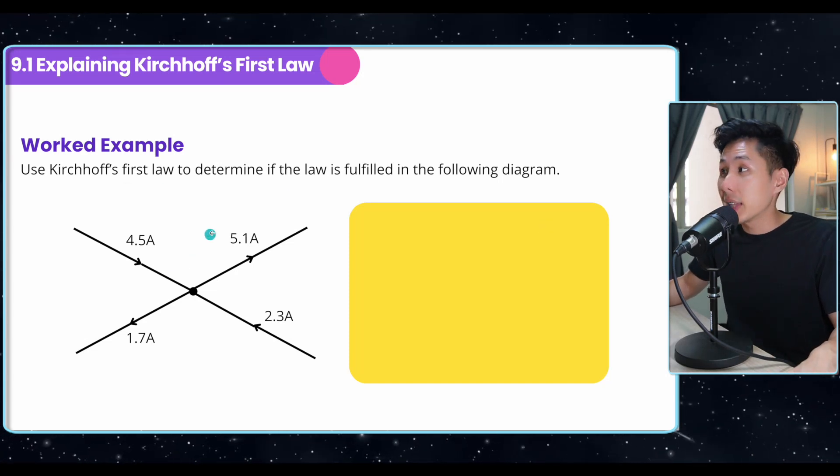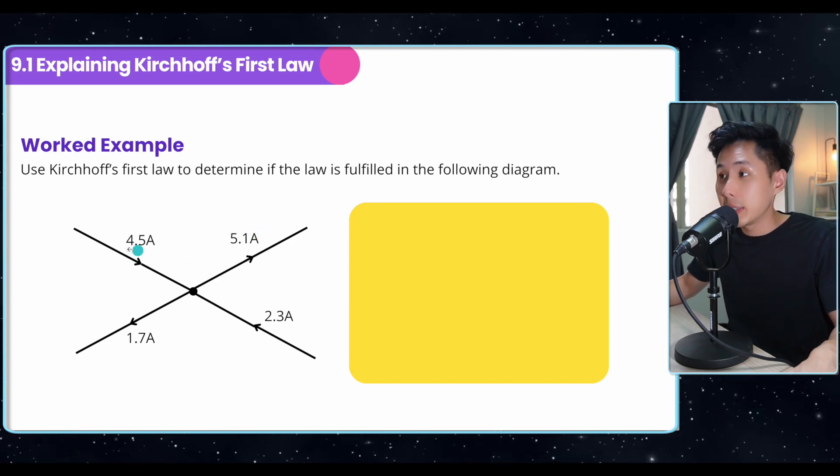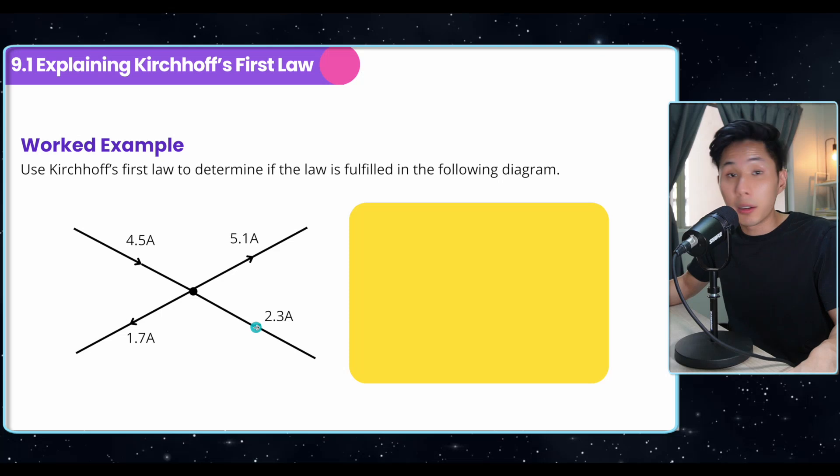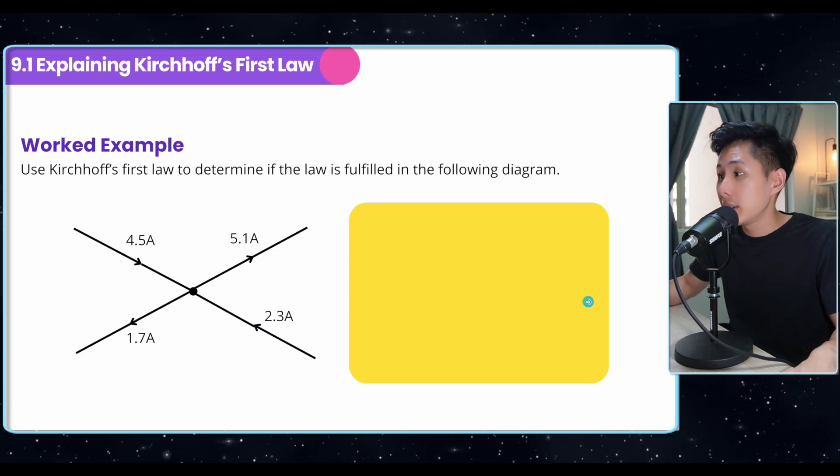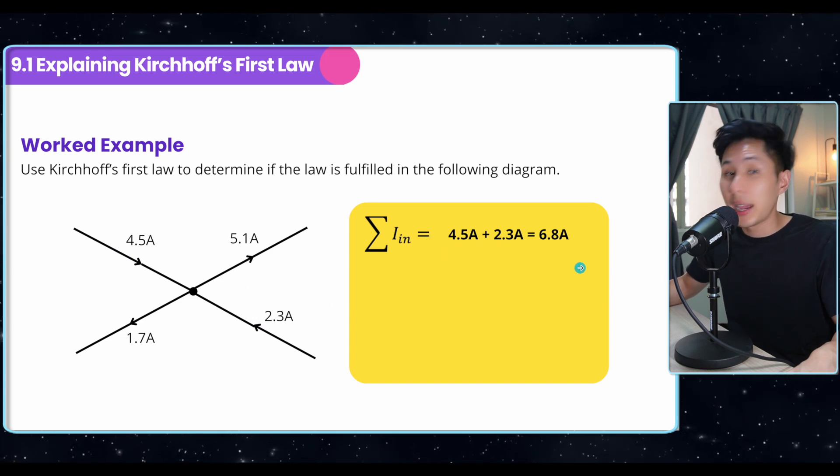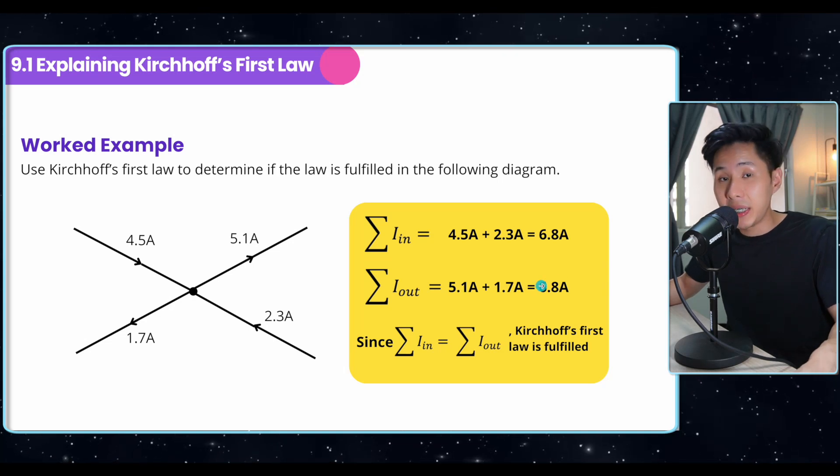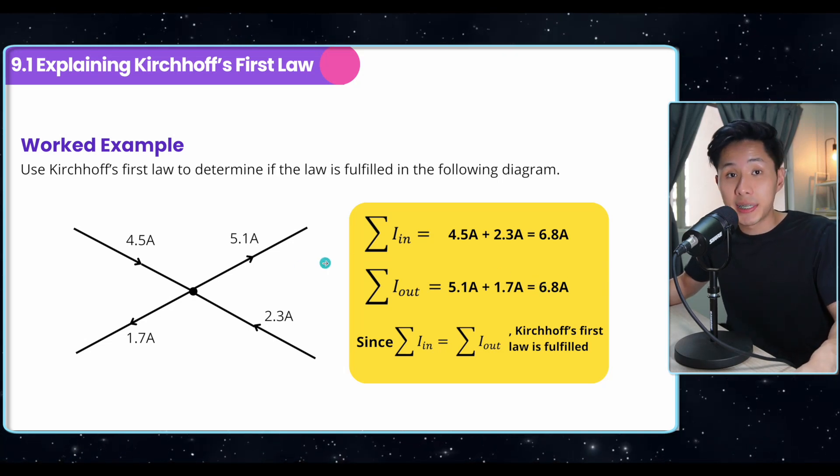So if you look at this diagram here, they ask us to determine if the law is fulfilled. So what we can do is first calculate what's the input current. You can look at the arrow to identify the input current. So when you sum them up, you got 4.5 plus 2.3, which is 6.8 ampere. And then do the same for output current. And you'll find that they are the same. And it means that the law is fulfilled in this diagram.